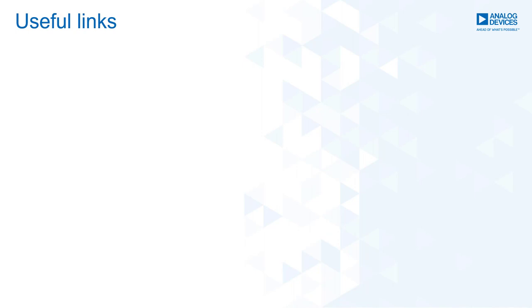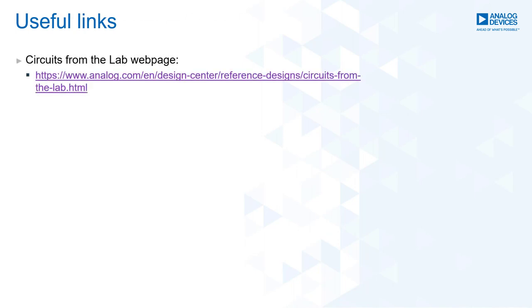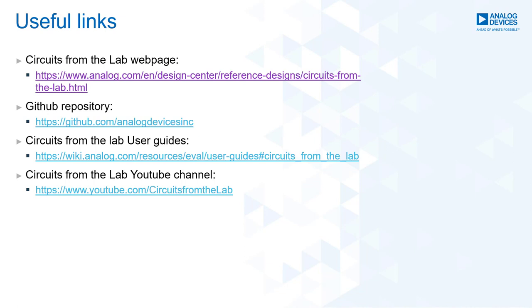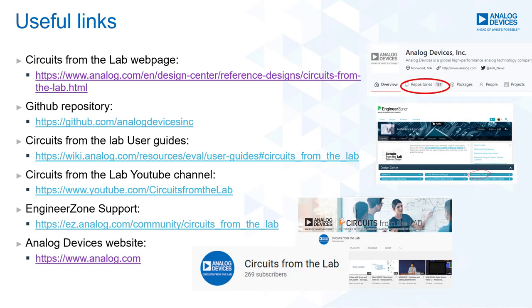Here are some notable links for your convenience. We have the CFTL webpage showing the list of reference designs, where you can search your preferred reference design for your application and access its design files. We also have the GitHub repository where all software-related items and their documentation are available. If you already have a reference design and need help with setup, we have user guides on our wiki pages, and you can check this YouTube channel for unboxing and setup demos. There is also EngineerZone for all your reference design questions. You can check these links in the video description box.